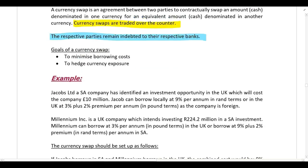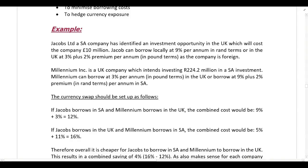Let's look at the example below. We have Jacobs Limited, a South African company that has identified an investment opportunity in the UK which is going to cost the company 10 million pounds. Jacobs can borrow locally in South Africa at 9% per annum in rand terms, or they can borrow in the UK at 3% plus a 2% premium, as the company is foreign.